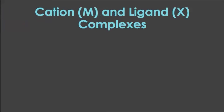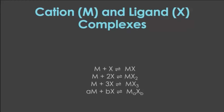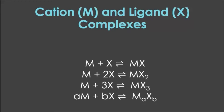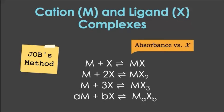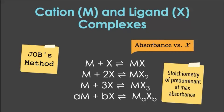Suppose that several complexes can form between cation M and ligand X, such that M + X → MX, M + 2X → MX₂, M + 3X → MX₃, or in general, aM + bX → MₐXᵦ. Job's method allows one to identify the stoichiometry of the predominant complex by plotting the absorbance measured at λmax against the volume fraction or mole fraction. Maximum absorbance is reached at the composition corresponding to the stoichiometry of the predominant complex.